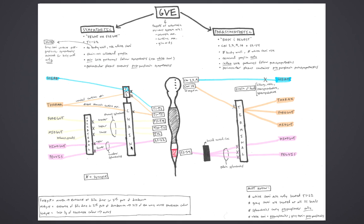Cranial nerve 10, the vagus nerve, provides preganglionic parasympathetics to the thorax, foregut, and midgut. These preganglionic fibers travel along arteries serving their targets to ultimately synapse at terminal ganglia at that particular target — an example of the perivascular plexus containing preganglionic parasympathetics. S2 to S4 form the pelvic splanchnics, which provide preganglionic parasympathetics to the hindgut and pelvis, traveling on pelvic and hindgut arteries to reach their respective terminal ganglia. These pelvic splanchnic nerves arise directly from the sacral ventral rami.